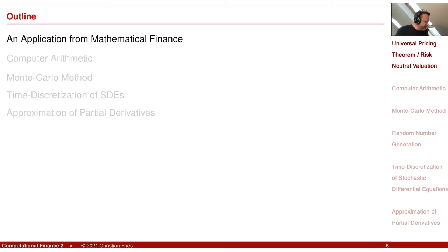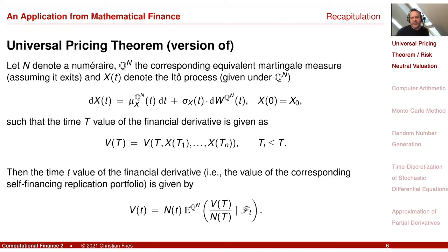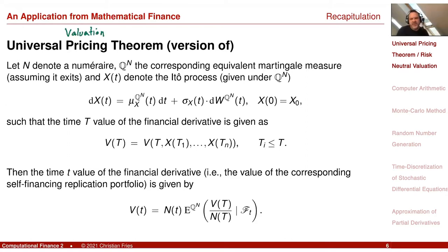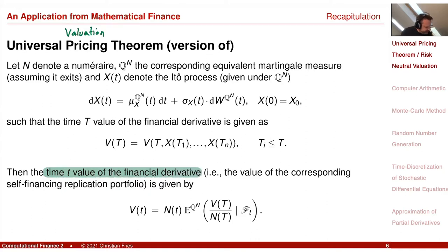Let's start with a prominent application for mathematical finance: the Universal Pricing Theorem. First remark — I do not like the name 'pricing' so much, because it's actually a valuation that is performed here. Pricing is maybe done by a market, and this theorem tells me how I can calculate a value. This theorem tells me that I can express the time-t value of a financial derivative.